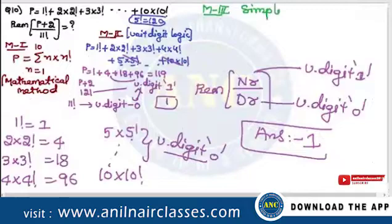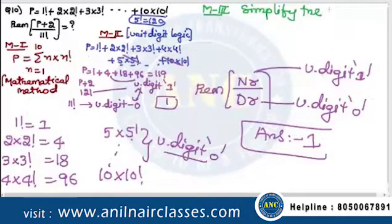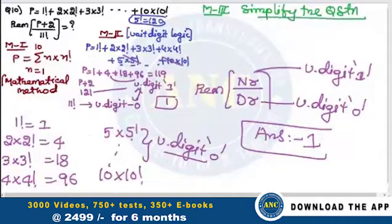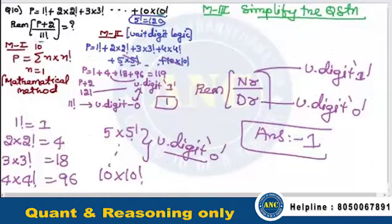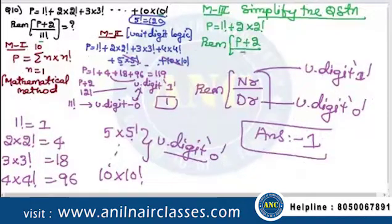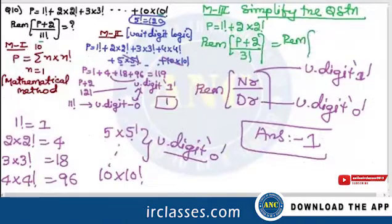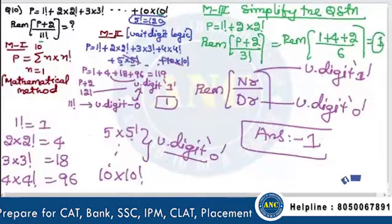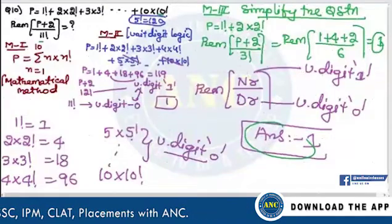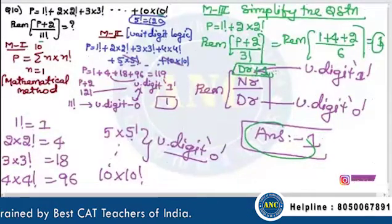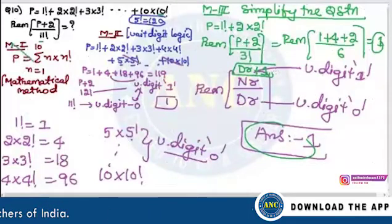Method 3: Simplify the problem. If you simplify the question — the sum is till 10 factorial and the remainder is by 11 factorial — so simplify it to a smaller value: P is 1 factorial plus 2 into 2 factorial. Find remainder when P plus 2 is divided by 3 factorial. It is nothing but 1 plus 4 plus 2 divided by 6, which is 7 divided by 6. Answer is 1. Why? Because the numerator is denominator plus 1.